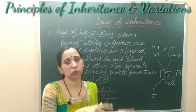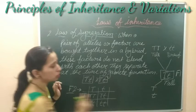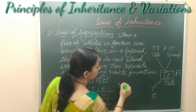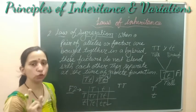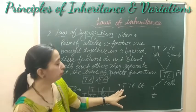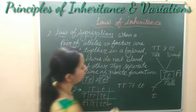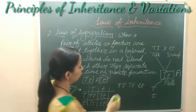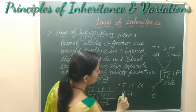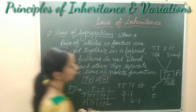In the F1 generation we got all tall plants, but in the F2 generation we also got some dwarf plants. If we talk about phenotype, we get two types of plants: 75% tall plants and 25% dwarf plants. The phenotype ratio is 3:1, and the genotype ratio is 1:2:1.